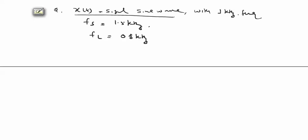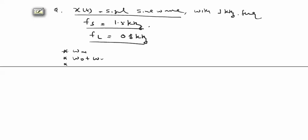In this question, a sinusoidal waveform signal with 1 kHz frequency is sampled with a 1.5 kHz sampling frequency, and a low pass filter of 0.8 kHz is used after sampling. What will be the output frequency? Using the same pattern, we calculate the sampled output frequencies: omega_m, omega_s ± omega_m, 2*omega_s ± omega_m, 3*omega_s ± omega_m, and all sampled frequency values.